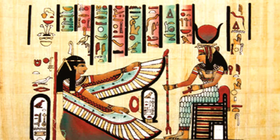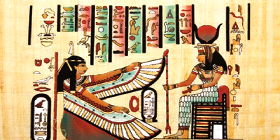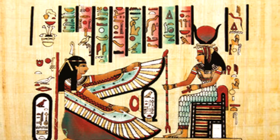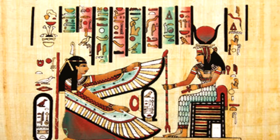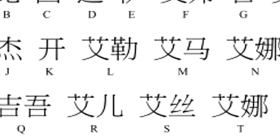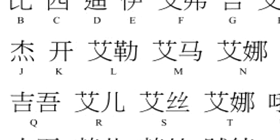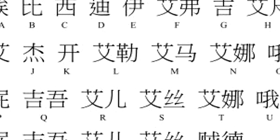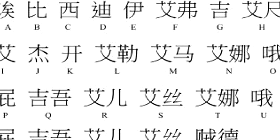For example, an ideogram of two sticks might mean legs, or it could mean walk. The Chinese and Egyptians evolved these into Chinese characters and hieroglyphics.